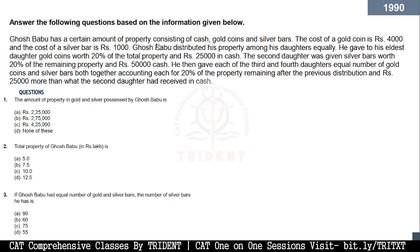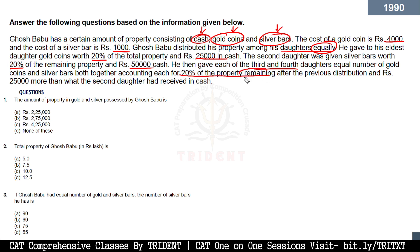The caselet talks about Ghosh Babu, who has a certain amount of property consisting of cash, gold coins, and silver bars — so three variables. The cost of the gold coin is 4,000 and the cost of the silver bar is 1,000. Ghosh Babu distributed his property among his daughters equally. The eldest daughter received gold coins worth 20% of the total property and 25,000 in cash. The second daughter was given silver bars worth 20% of the remaining property and 50,000 in cash. He then gave each of the third and fourth daughters equal numbers of gold coins and silver bars, both together accounting for 20% of the remaining property, and 25,000 more than the second daughter received in cash.